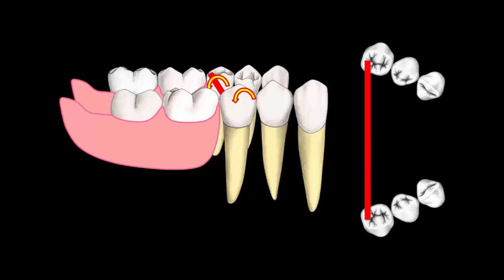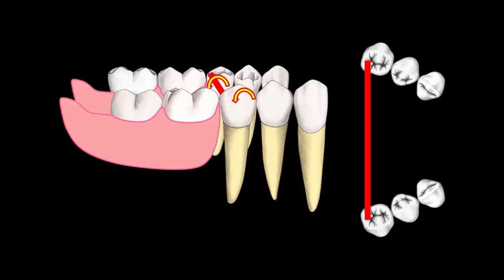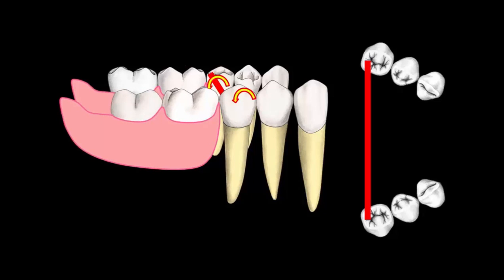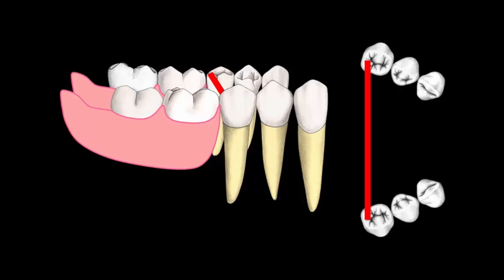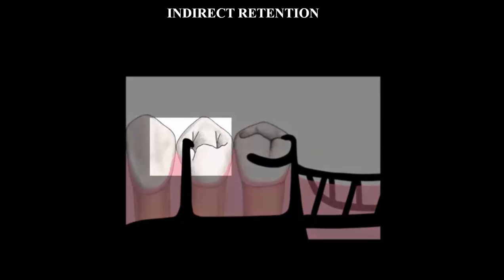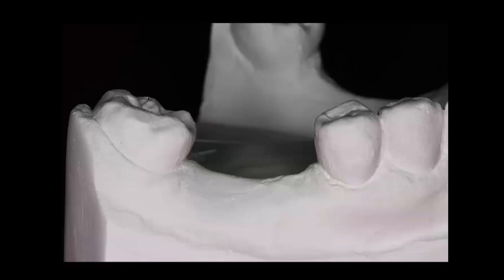The presence of a fulcrum line can be demonstrated by showing the red line and how the removable partial denture can rotate around the fulcrum line. In this example, the indirect retainer can be used as a guide to determine when the removable partial denture might need to be relined.